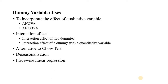The fourth use is that the dummy variable regression model helps us to de-seasonalize quarterly and monthly data. Even though there are a large number of different methods available for de-seasonalizing monthly or quarterly data, the dummy variable provides an alternative method. The last use is that the dummy variable helps us to find out the coefficients of piecewise linear regression models. We will discuss all these things one by one.